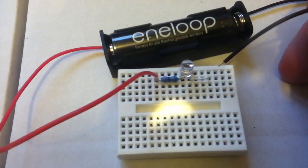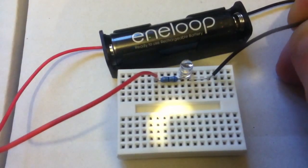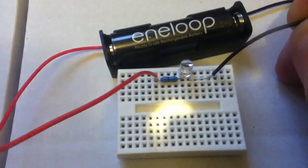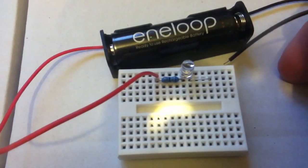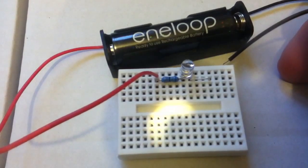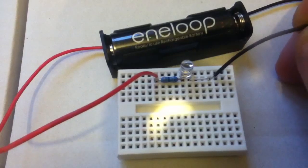One is that 1.2 volts coming from the battery isn't enough to overcome the forward voltage of the LED. But the second reason, and you may just be able to see it, is that the LED is the wrong way round. So wrong polarity, it's not going to light up.